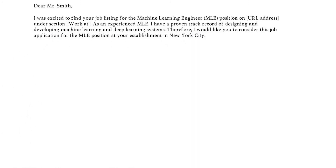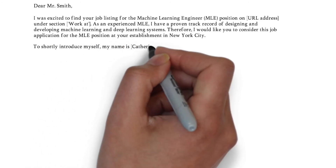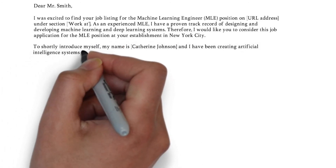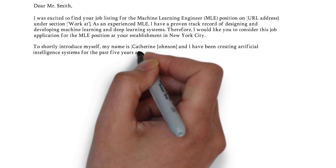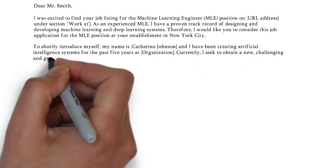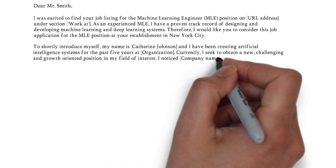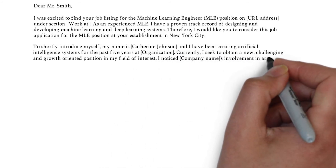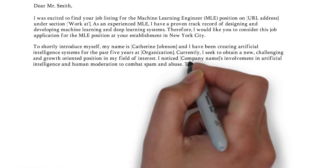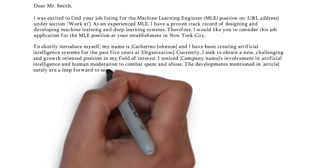In the second paragraph, you shortly introduce yourself, followed by a motivation for the job opportunity. Try to answer questions like: what triggers you to work as a machine learning engineer, or why do you want to work at their company? Show that you are in fact interested in specifically this job role at their company.